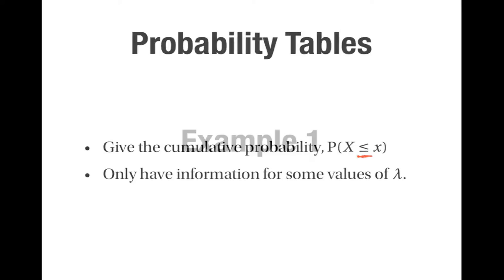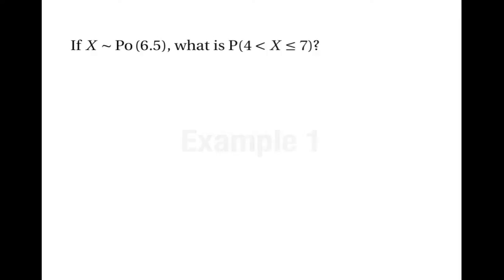Let's have a look at a couple of examples to see how to use them. First of all, suppose that x has the Poisson distribution where the expected number of events is 6.5. Let's find the probability that x is greater than 4 and less than or equal to 7.